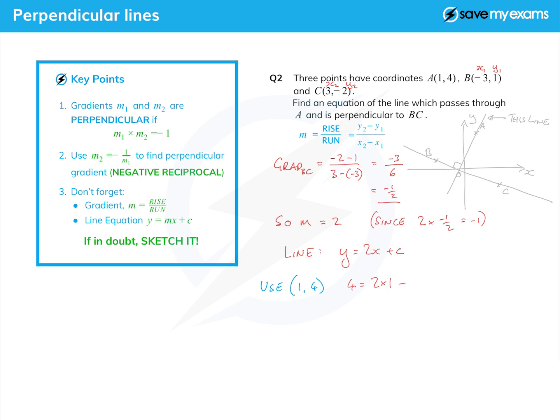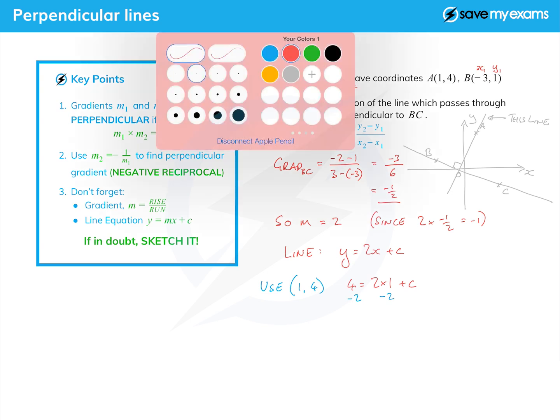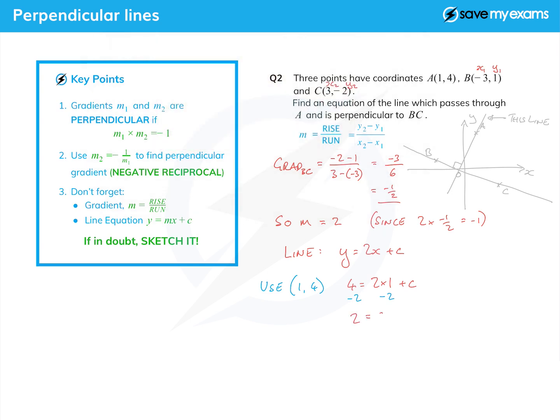Then I'm going to subtract the 2 times 1, which is just 2, from both sides, and that gives me 2 equals c, or if you like, c equals 2. So the equation of the line finally is y equals 2x plus 2. That's quite neat in that form so we don't need to change it any further. There you go, perpendicular lines have gradients that multiply together to give minus 1.